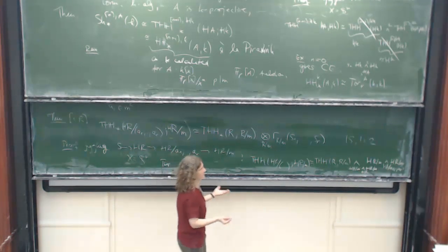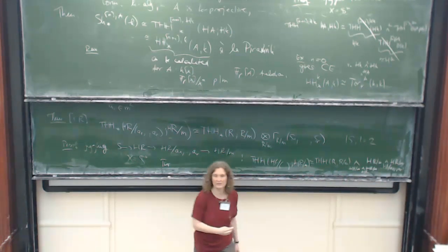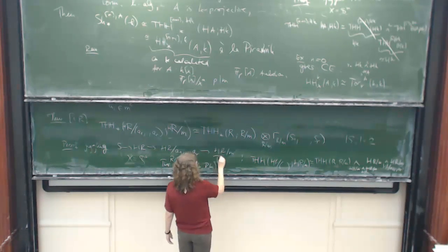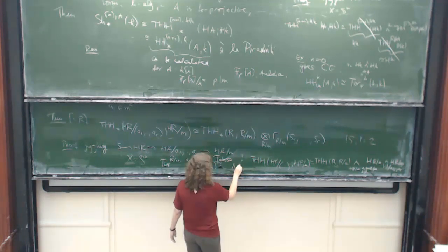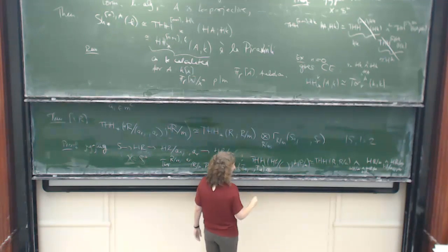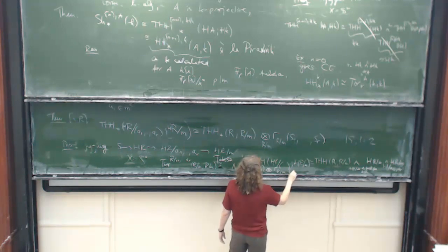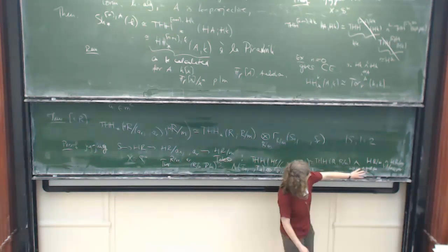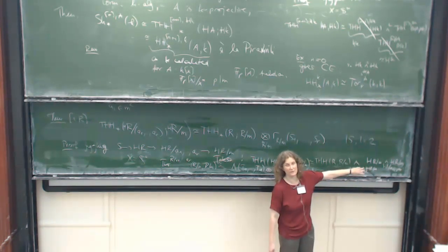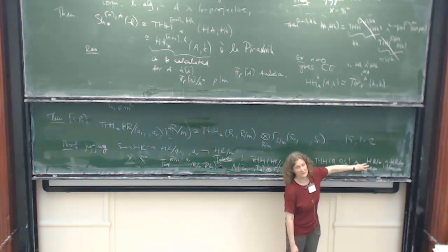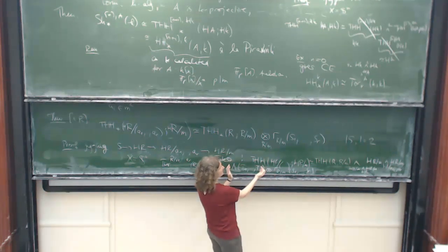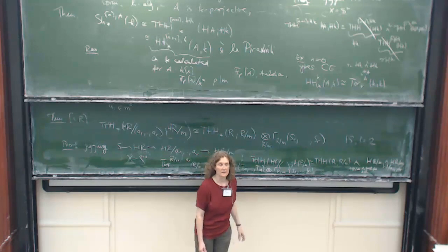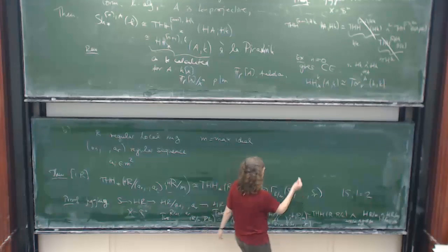So if you stare at this, you get a Künneth spectral sequence, and what you have is the TOR terms, and the thing you have to calculate is this one, but Tate actually did it for us. So in this situation, so this is due to Tate '57, you get a bunch of exterior guys depending on the dimension of M, and then you get exactly these divided powers that realize that you try to kill something. But then it turns out that if you calculate the TOR term here, this is just the exterior guy.